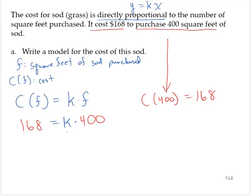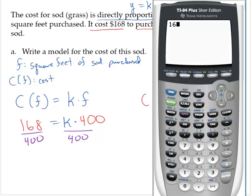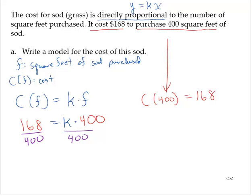Let's solve for k, divide through by 400. And here's a good place to use the calculator. 168 divided by 400 is 0.42. So then k is equal to 0.42.